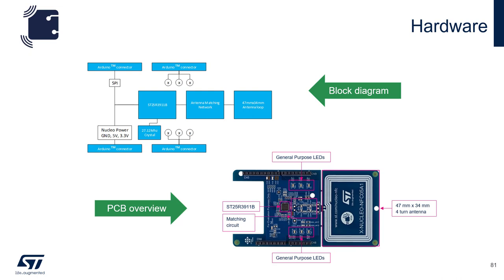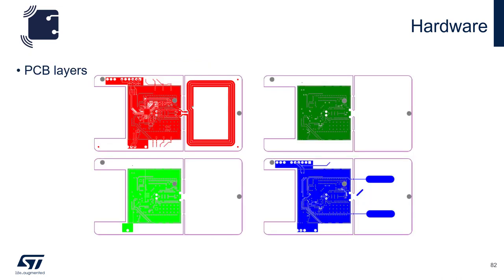The Nucleo Board differs from the Discovery Board in that it does not have a microprocessor on board. In order to run the board, you would need an STM32 Nucleo Board. Like the Discovery Board, the Nucleo Board is also a four-layer PCB: the top layer is signal, the second layer is ground, the third layer is power, and the last layer is signal again.